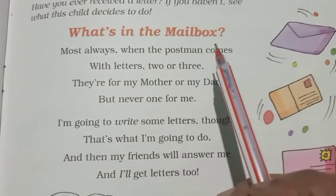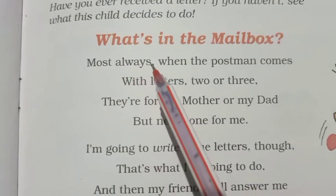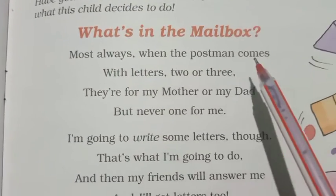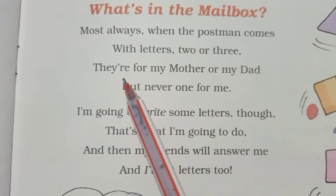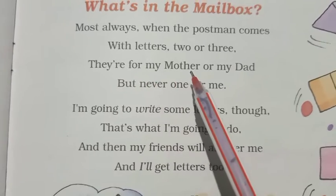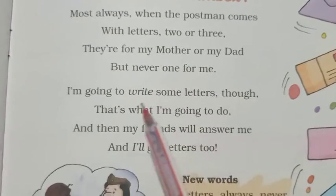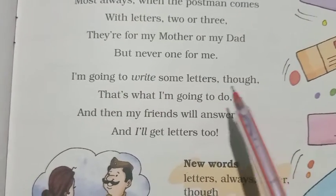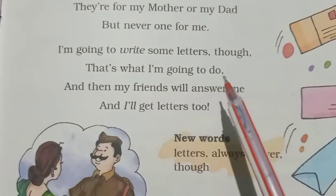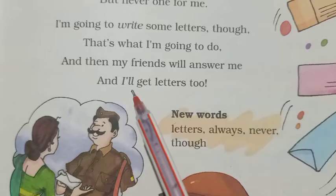What's in the mailbox? We can check what's in the mailbox. Most always when the postman comes with letters, two or three — they are for my mother or my dad, but never one for me. I am going to write some letters; that's what I am going to do. And then my friends will answer me, and I will get letters too.